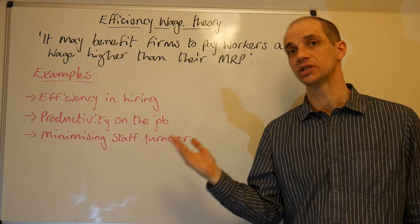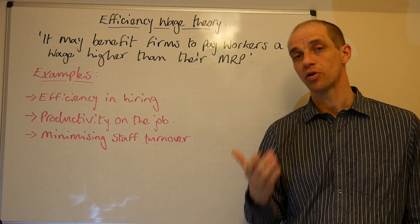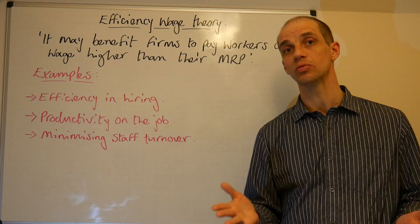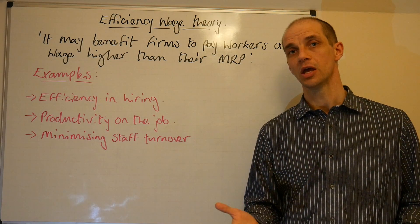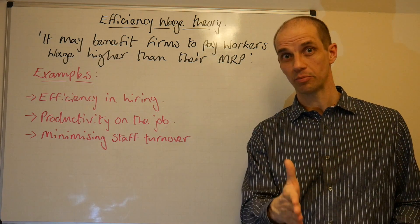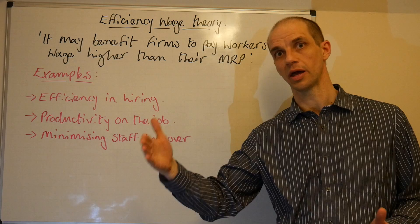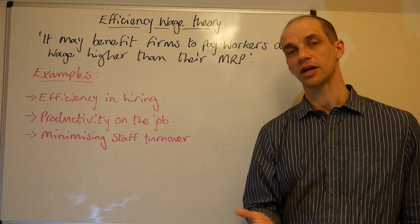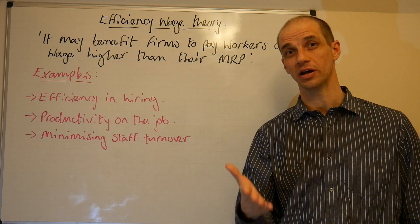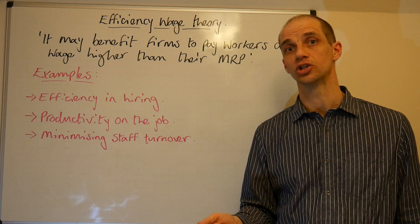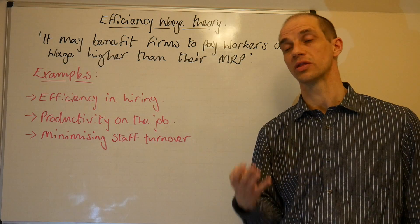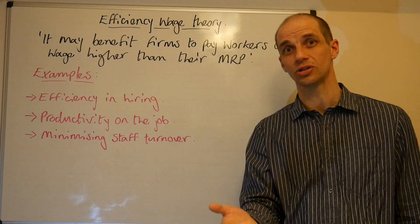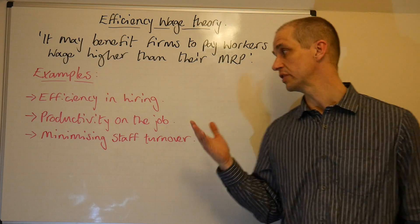Further to this, we've got productivity on the job. This is really about ensuring that your workers have an incentive to continue working hard within your firm. So if they know that the opportunity cost of working for firm A is that they forego working at firm B, and firm B pays far less in wages, they've got an incentive to work harder at firm A and make sure they do not lose their job. It's therefore argued that this can help to boost productivity and could be posed as a possible solution to the principal-agent problem and profit satisficing.